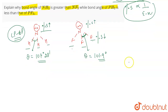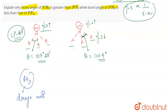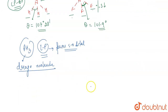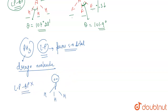Now if we talk about PH3, PH3 is a well-known Drago molecule, meaning it does not show any hybridization. The lone pair on phosphorus is present in the pure s orbital. Because the lone pair is in the pure s orbital, it is not an active lone pair — it does not participate in any attractions or repulsions. Therefore, there are no lone pair–bond pair repulsions taking place in PH3.